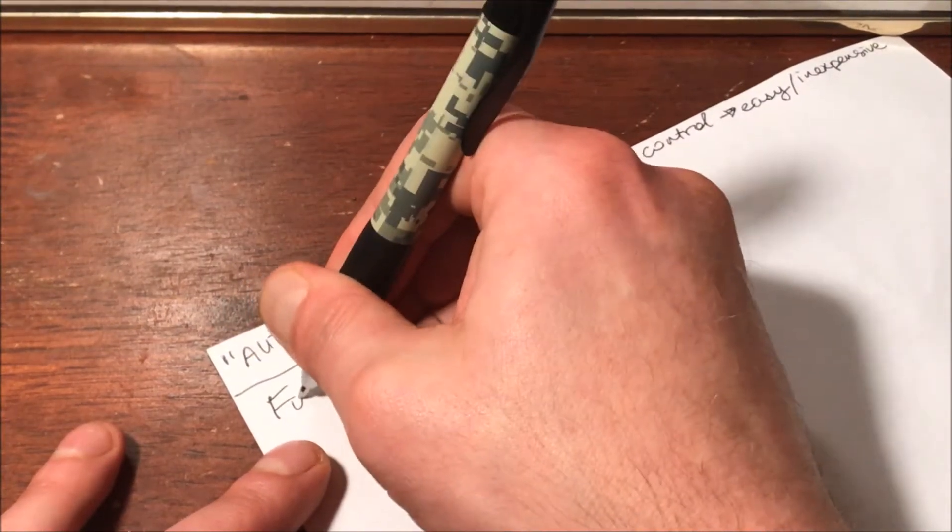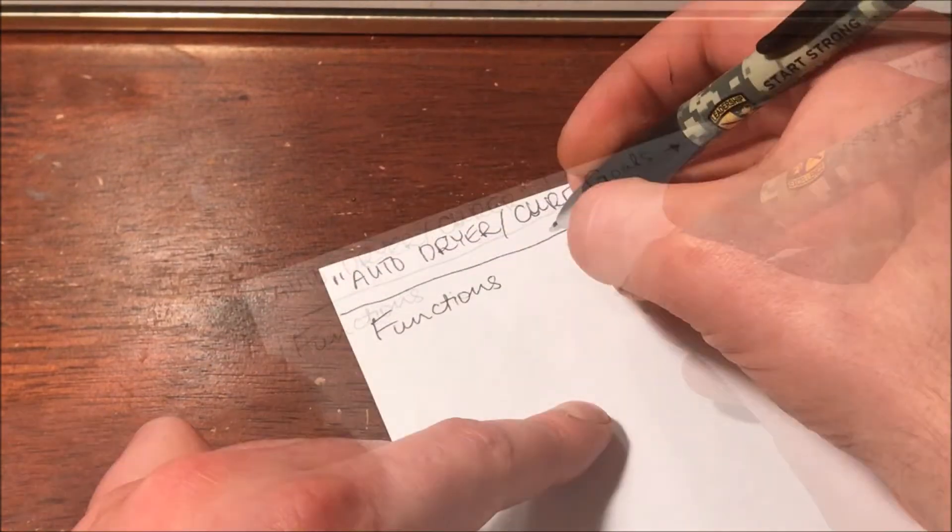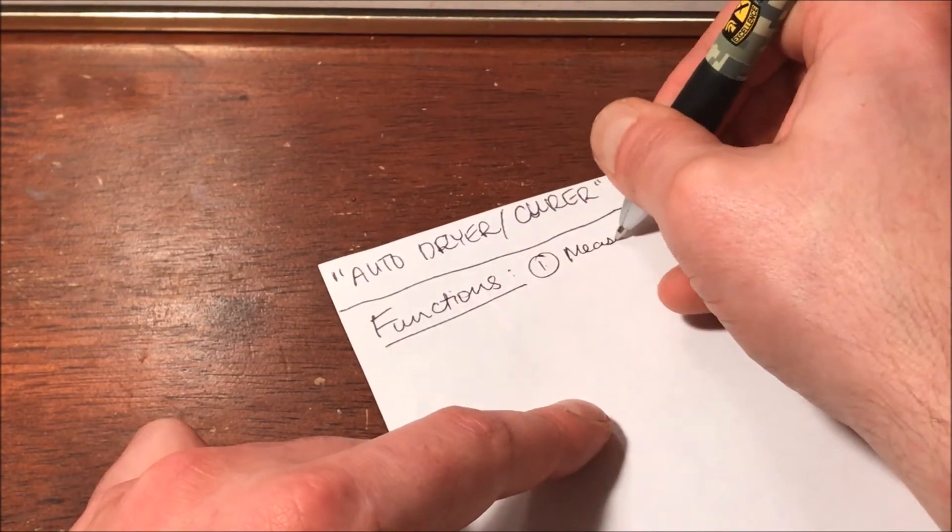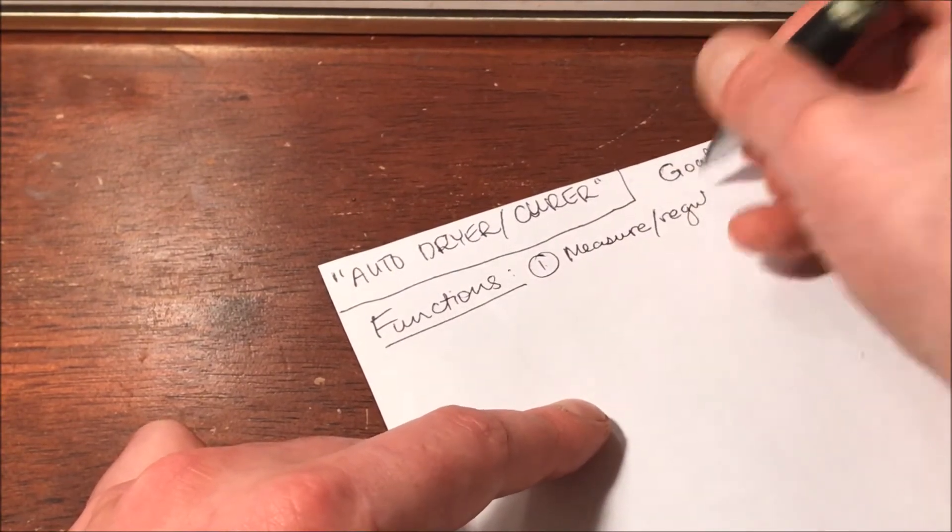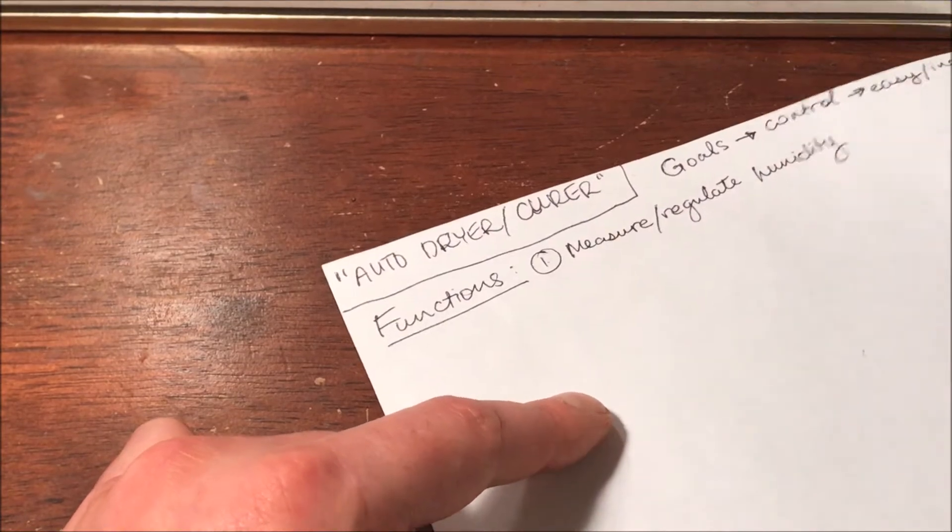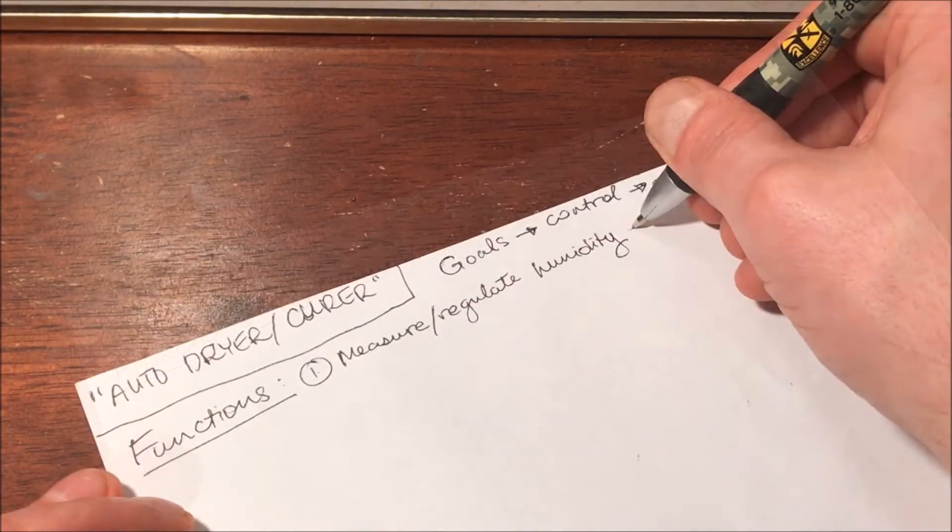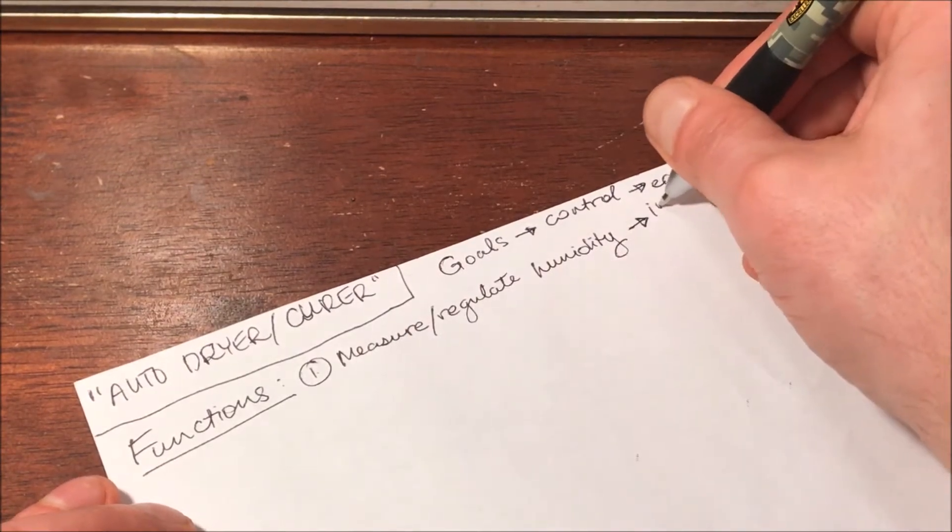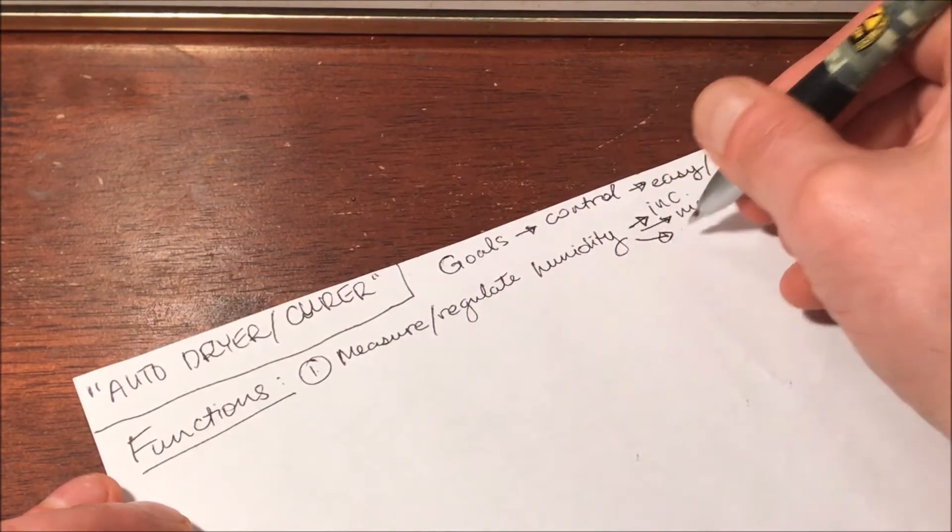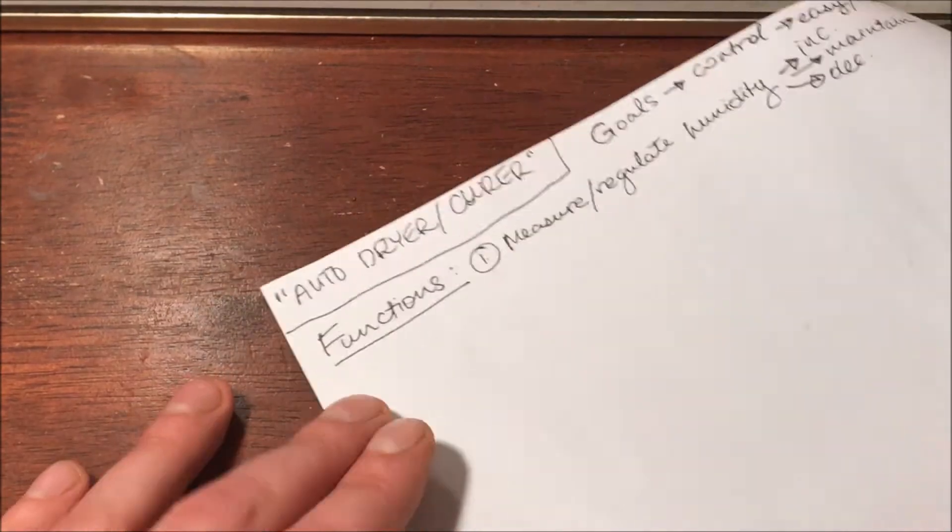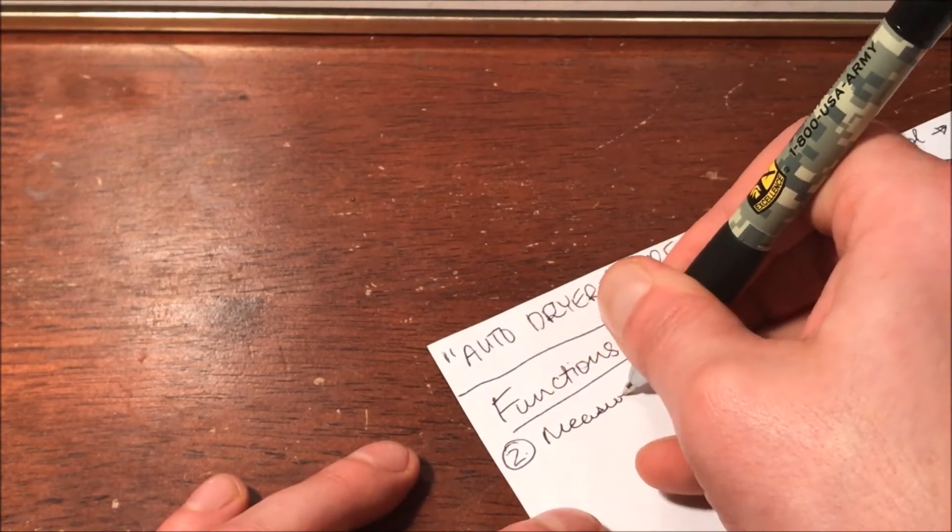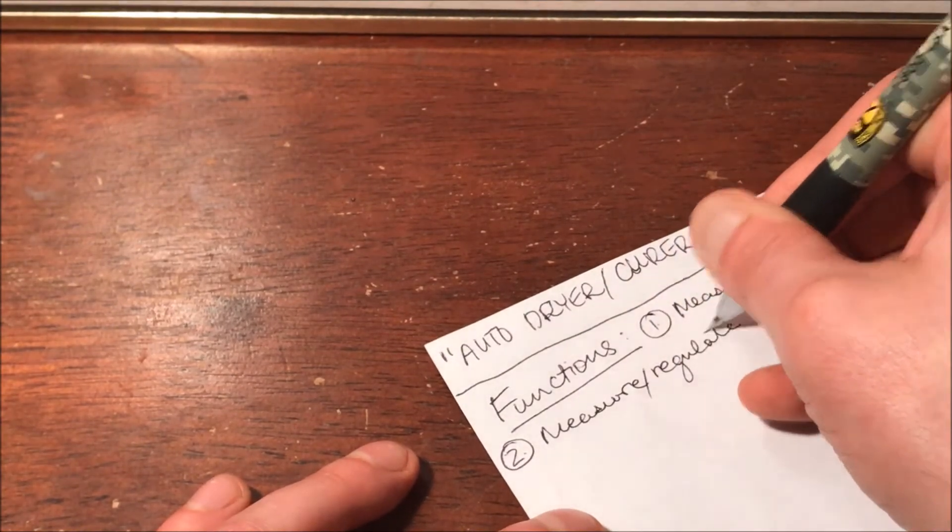So let's go ahead and just start with the main things, which I would say are the functions of this design. Sorry for the shaking, by the way. Number one is going to be to measure but also regulate. We want to have that control, right? Humidity. That's the most critical thing I would say for the drying process. We can also split that up further because what we need to do is to be able to increase the humidity to maintain it and or to decrease it. Right? Simple enough.